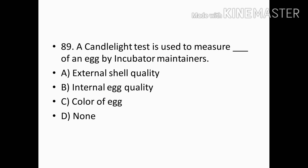A candlelight test is used to measure dash of an egg. Options — External shell quality, Internal egg quality, Color of egg, None. Correct answer: Option B — Internal egg quality.